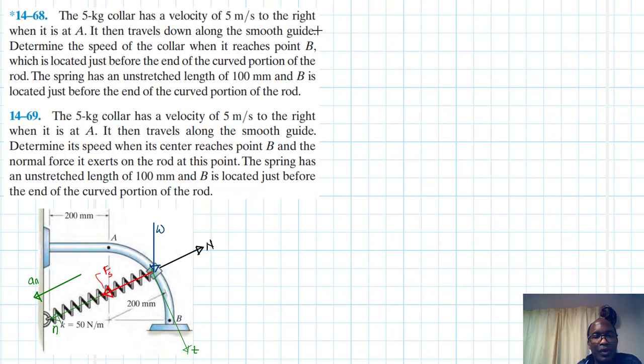Let's write down this principle of conservation of energy. So the kinetic energy at point A plus the potential energy at point A is equal to the kinetic energy at point B plus the potential energy at point B. Let me pick this for my gravitational potential energy as my datum.